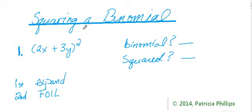So the first thing we're going to ask ourselves is, is it a binomial? Check. And is it squared? Check. So if you see a question that says solve, or if you're not given too much information, you know that it's an issue of a binomial squared if you see the binomial and you see a square.